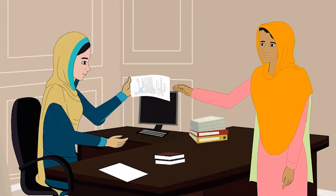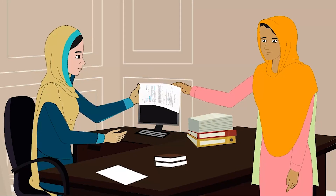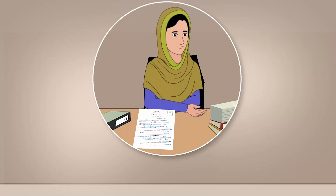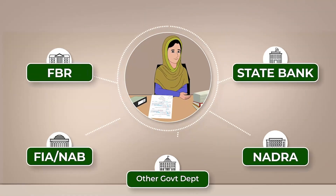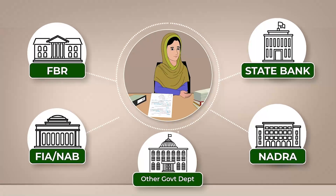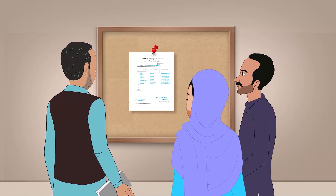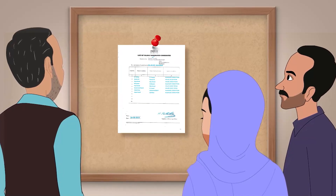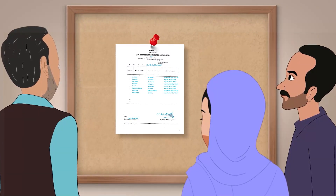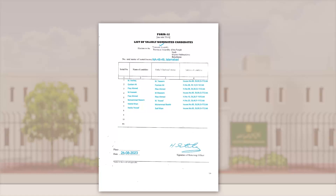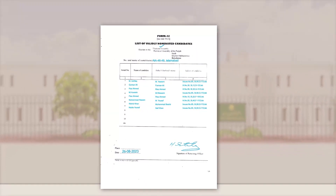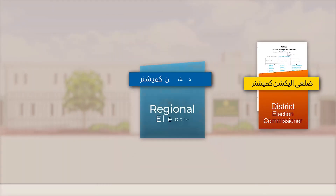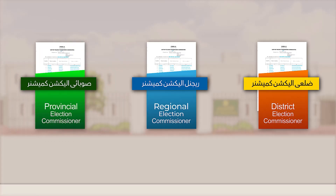The ROs will write on the nomination papers of each candidate their decision about the acceptance or rejection. The reason for rejection will be communicated to the candidate and details of the decision will be recorded in the relevant form. For the purpose of scrutiny, the ROs can get assistance from any government department. After the scrutiny process, the ROs will prepare a list of eligible candidates on Form 32 and display it at a prominent place in their office. They will also provide Form 32 through the District Returning Officer to the Election Commission of Pakistan, as well as the District Election Commissioner, Regional Election Commissioner, and Provincial Election Commissioner.